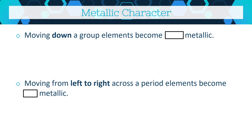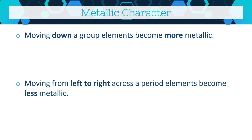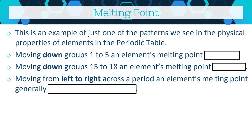How metallic or non-metallic something is — its metallic character — follows specific patterns. As you go from top to bottom down a group, elements become more metallic; those at the bottom show metallic properties more than those at the top. As you move from left to right across a period, elements become less metallic — which makes sense, since metals are on the left and non-metals are on the right.